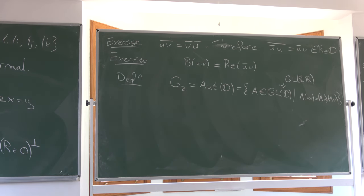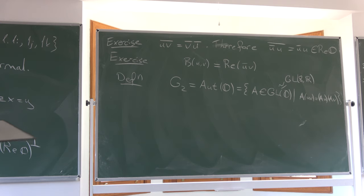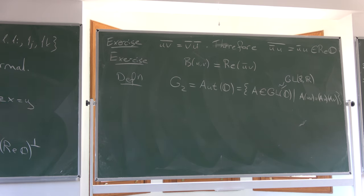Concretely, this is like identifying group elements with their matrix columns: once you have the first, second, and fourth columns of the 7×7 matrix (corresponding to where I, J, L go), there's a unique way to construct the remaining columns, since K = I·J and so on. These two correspondences are inverse to each other and continuous, establishing the homeomorphism.